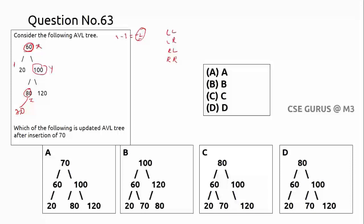For a right-left case, we first perform a right rotation on the right subtree. Right-rotating at 80: 80 becomes the root of that subtree, 70 comes to the left of 80, and 100 goes to the right of 80 with its right child 120 intact. Node 60 and subtree rooted at 20 remain as before.